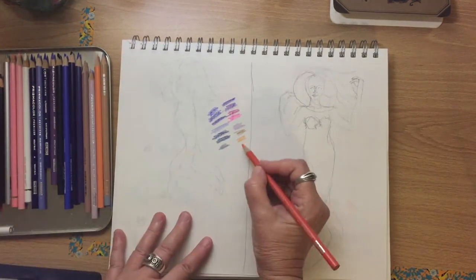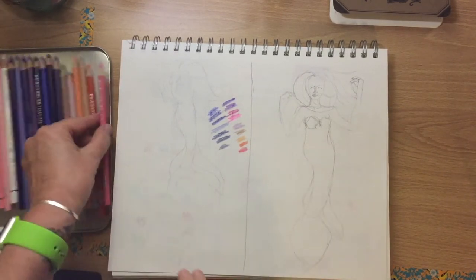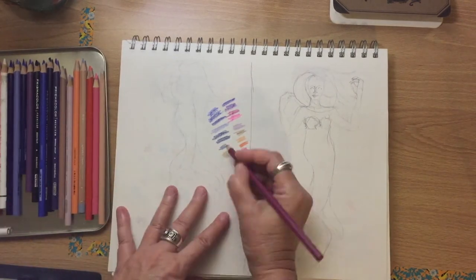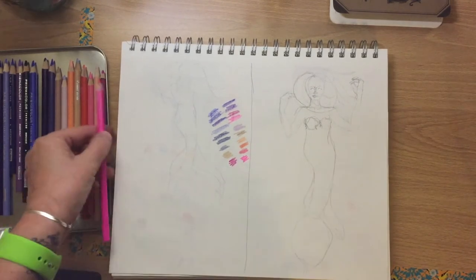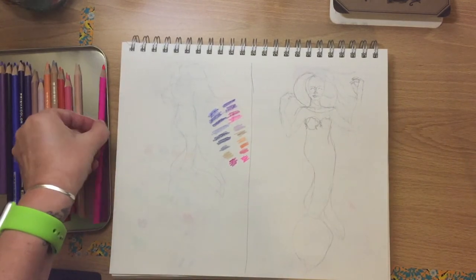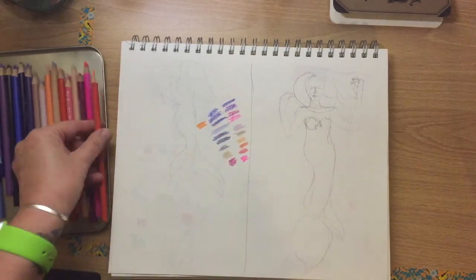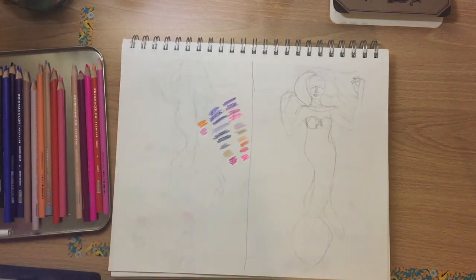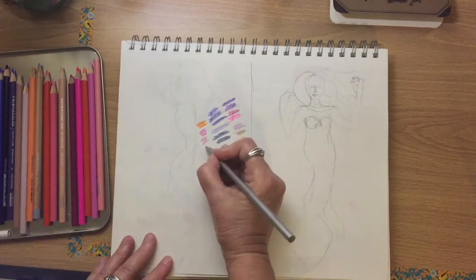So what I did was I took both reference photos into Procreate and I just moved them around until the proportions look correct. Cause I cannot figure out how her hips would work in the fish with the fish's tail. I don't know. It was a failure of imagination on my part. So I took it into Procreate and moved it around until it looked sort of natural. I mean, as natural as possible.